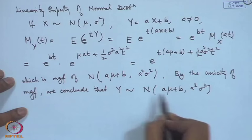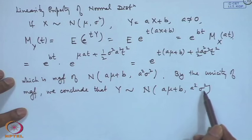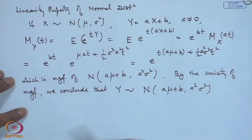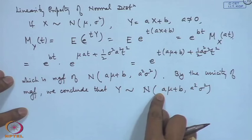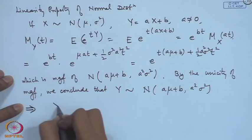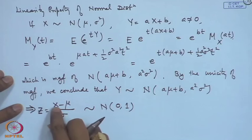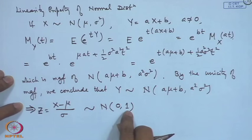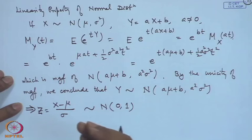So any linear function of a normal random variable is also normally distributed — not just the mean and variance change linearly, but the distribution type is preserved. In particular, if we take Z = (X − μ)/σ, then Z ~ N(0, 1). So from any normal random variable we can transfer to N(0,1) by subtracting the mean and dividing by the standard deviation. This is called standardization.